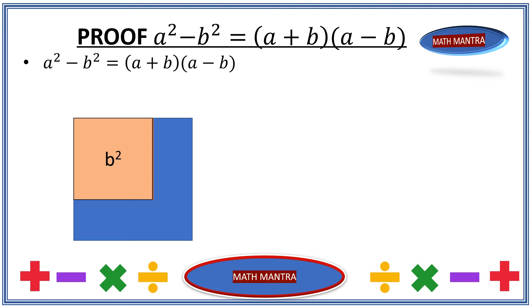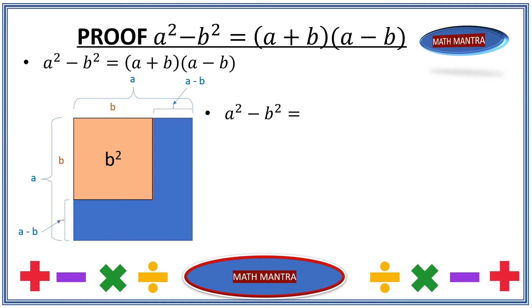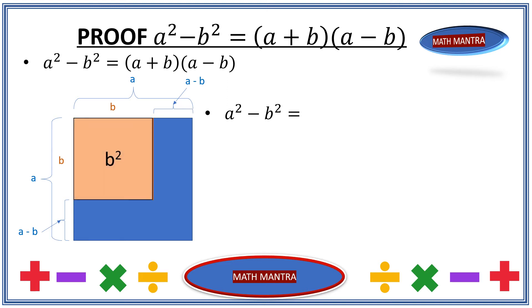Let's label the line segments along the sides of the b square as length b in each direction. The a square has sides of length a on both sides, giving us a squared. What's left along the length of a after accounting for b is essentially a minus b, so let's label those segments as well. Focusing on the left side of the equation, we have a squared minus b squared.